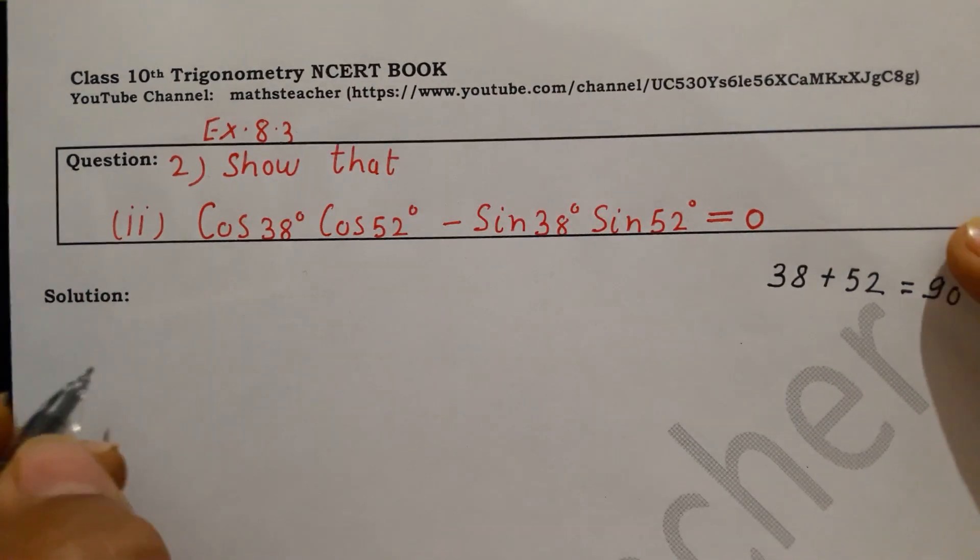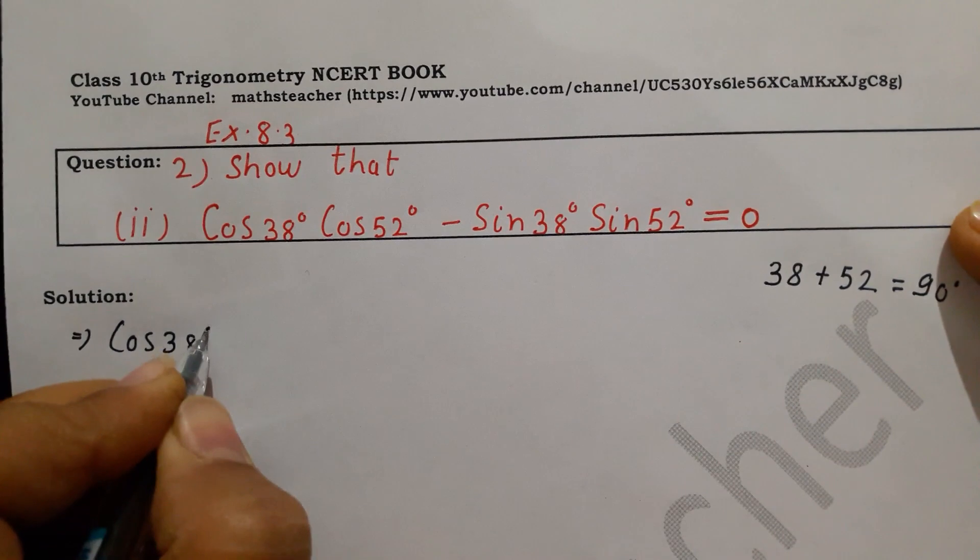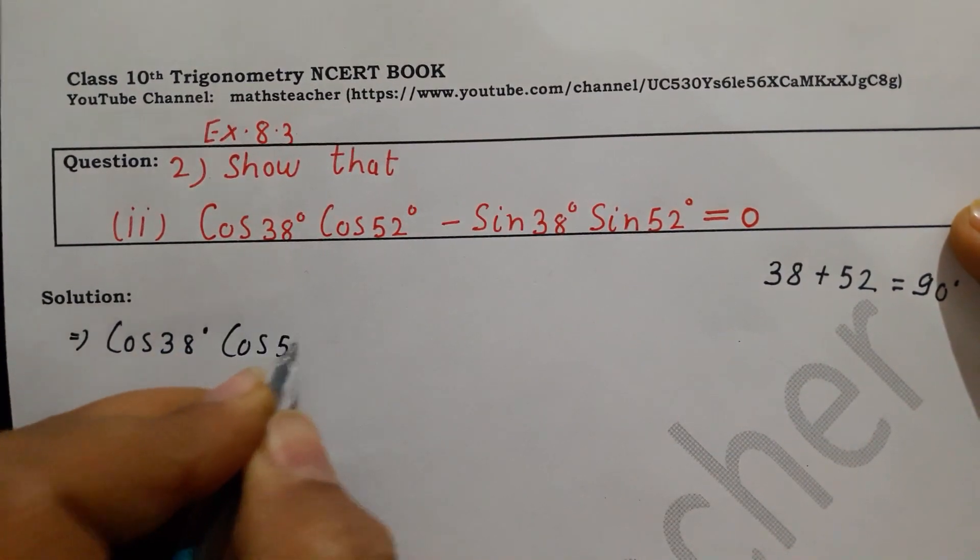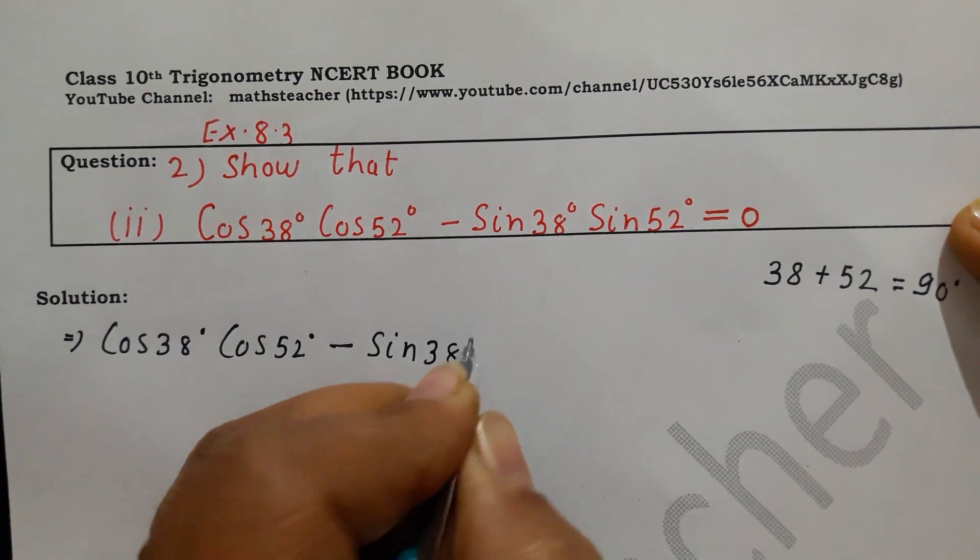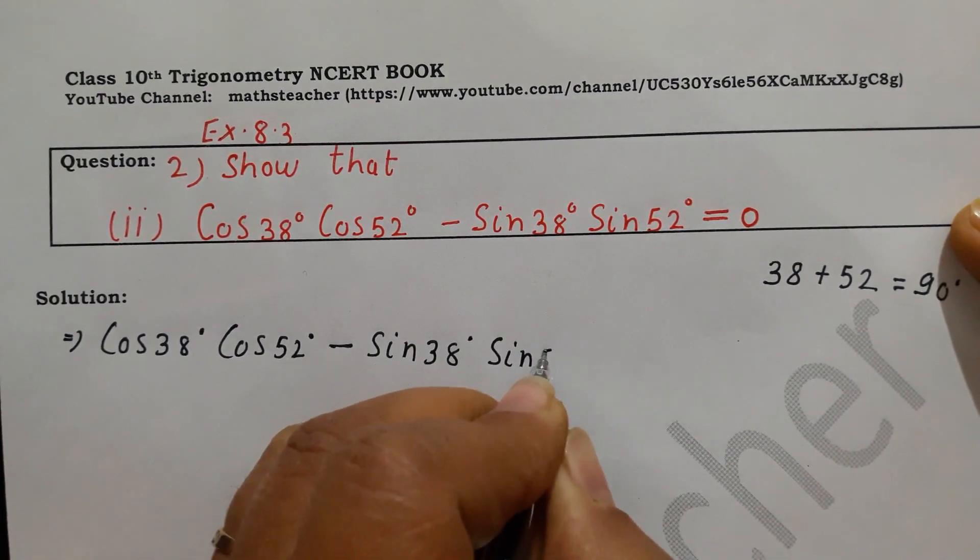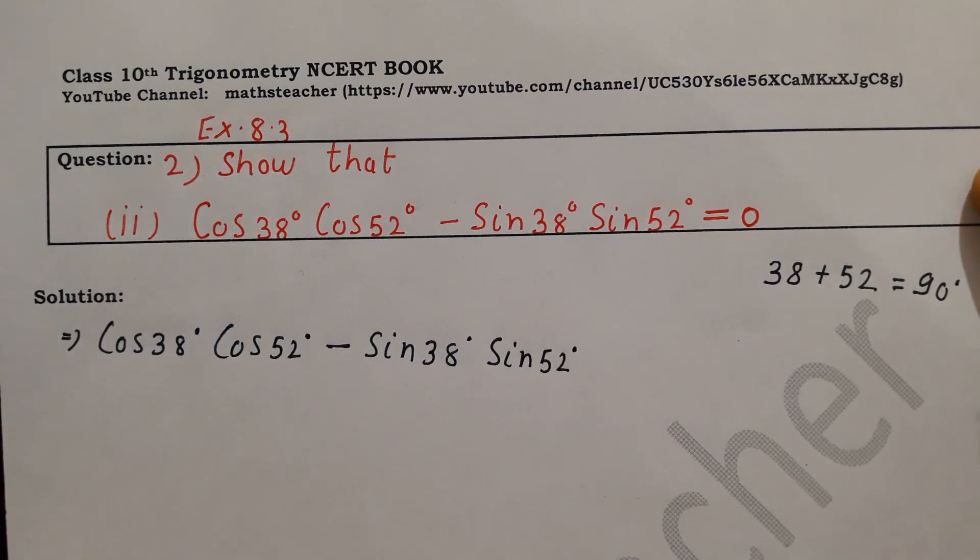So here in this question, cos 38° cos 52° minus sin 38° sin 52°. Now, what do we do with this? Either we change 38 or 52.